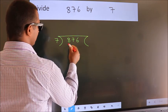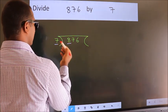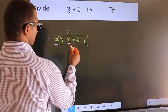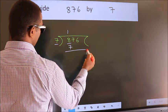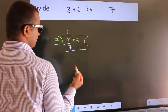Here we have 8, here 7. A number close to 8 in the 7 table is 7 once is 7. Now we should subtract. We get 1.